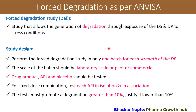This is the important part of your forced degradation study: the acceptance criteria. If you go through the ICH guideline, you will not find acceptance criteria for degradation. But ANVISA Brazil has given these details. According to this guideline, the test must be conducted to promote degradation of greater than 10%. If you are not able to achieve 10% degradation, you need to justify why there is degradation less than 10%.